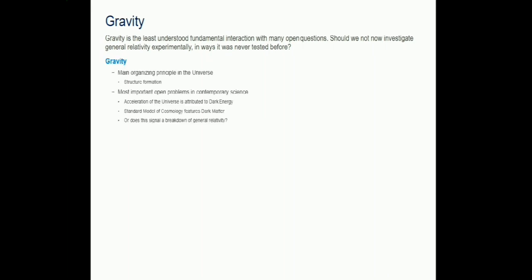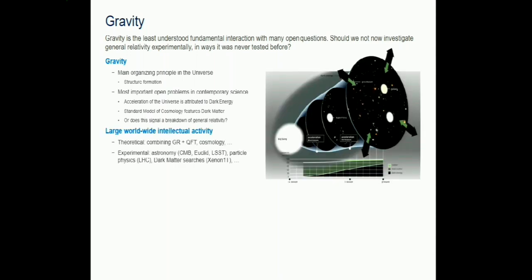Gravity is the least understood interaction with many exciting open questions. It was great to hear that 50 percent of yesterday's Nobel Prize went into cosmology. Gravity is the main organizing principle in the universe; every time you hear about dark matter and dark energy, it relates to gravity, possibly signaling a breakdown or needed changes in general relativity. The intellectual activity worldwide is great, both theoretically and on instrumentation, and will only increase with missions like Euclid, LSST, and others.